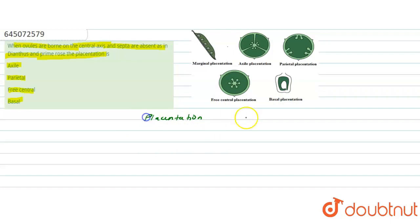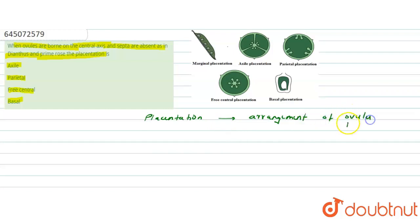First, what is placentation? Placentation is the arrangement of ovules to the placenta inside the ovary. This arrangement is called placentation.